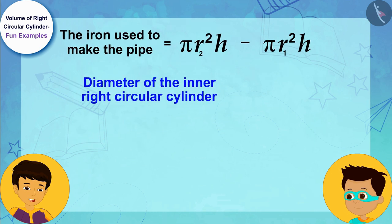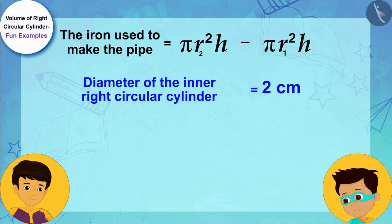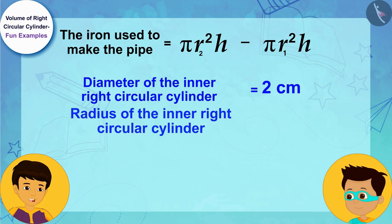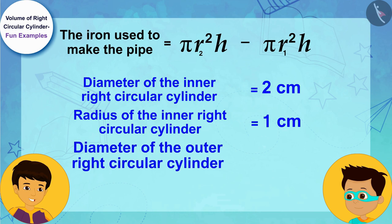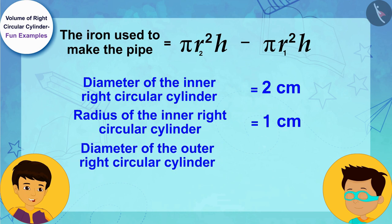And the diameter of the outer right circular cylindrical portion of the pipe is 2.5 centimeters. This means its radius will be 1.25 centimeters.